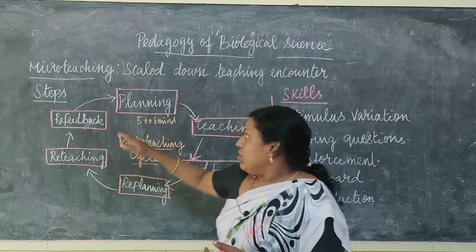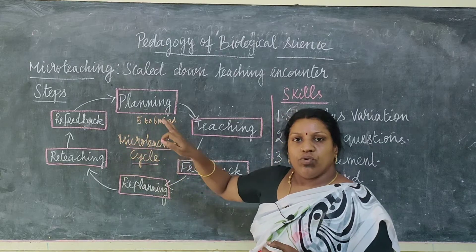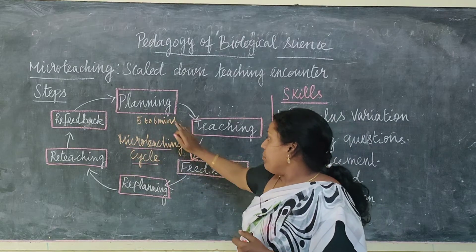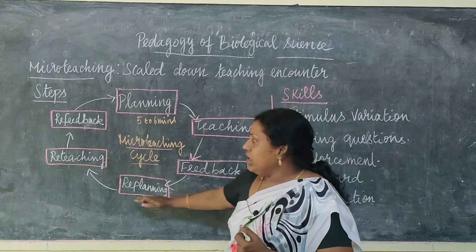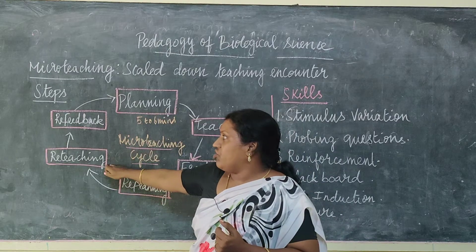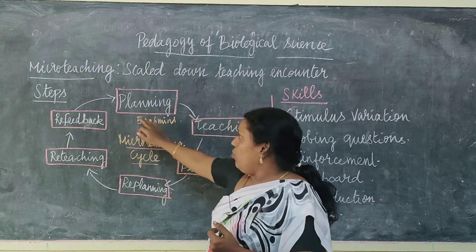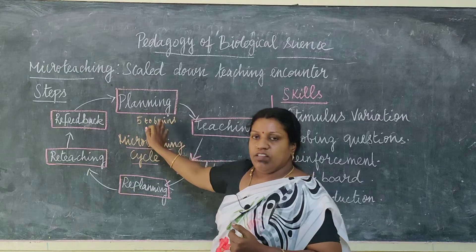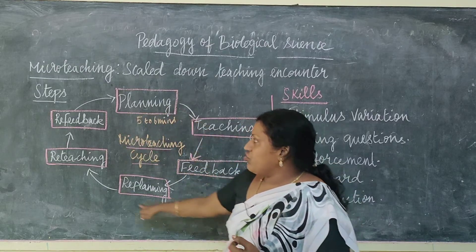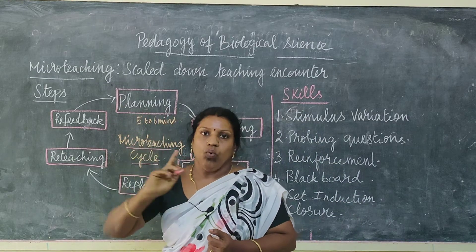So micro teaching steps are: planning, teaching, feedback, re-planning, re-teaching, and re-feedback. Each teaching session is about 5 to 6 minutes. The full cycle takes about 30 minutes for one student. These steps form a complete micro teaching cycle.